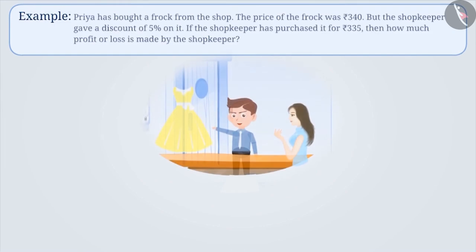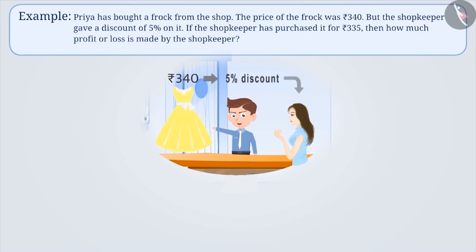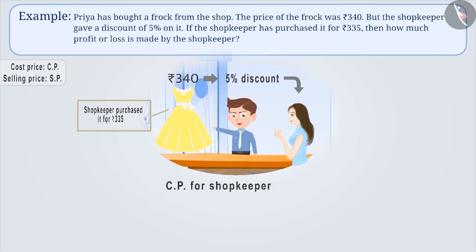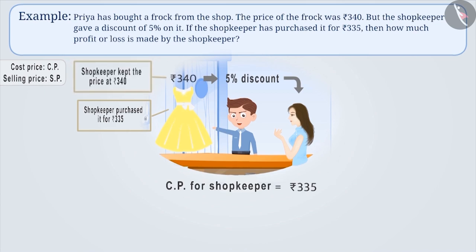Next example. Priya has bought a frock from a shop. The price of the frock was Rs. 340, but the shopkeeper gave her a discount of 5%. The shopkeeper purchased it for Rs. 335. Then how much profit or loss is made by him? The cost price for the shopkeeper is Rs. 335. He kept the selling price of the frock as Rs. 340, but while selling it to Priya, he gave a discount of 5% on it.